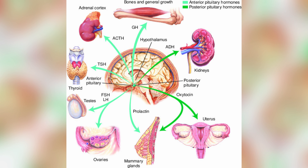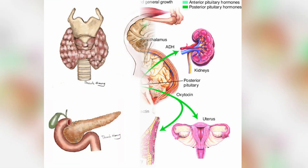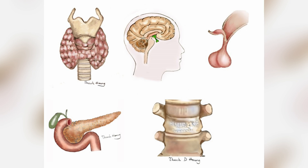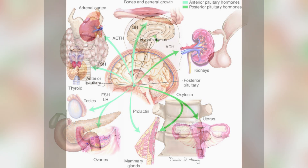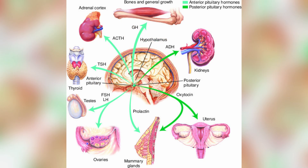What is endocrine? Endocrine glands include the hypothalamus, pituitary, thyroid, parathyroid gland, adrenals, pancreas, ovaries, testes, and pineal.